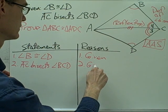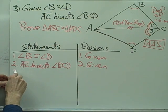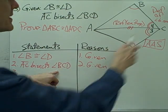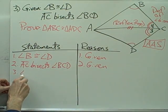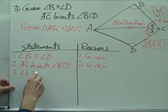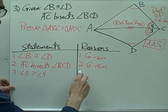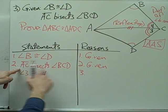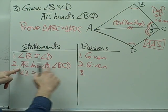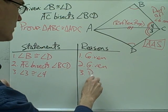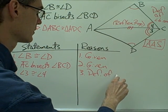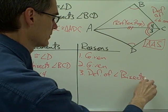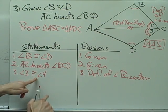Segment AC bisects angle BCD — that's given. Since segment AC bisects angle BCD, I know that angle three is congruent to angle four. That's because of the definition of an angle bisector — by the definition of angle bisector, angle three is congruent to angle four.